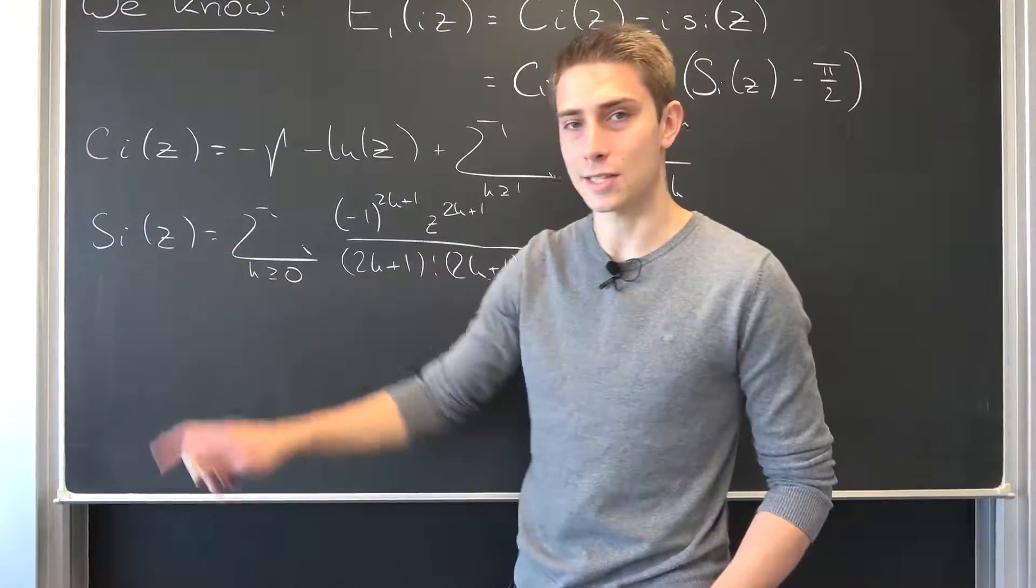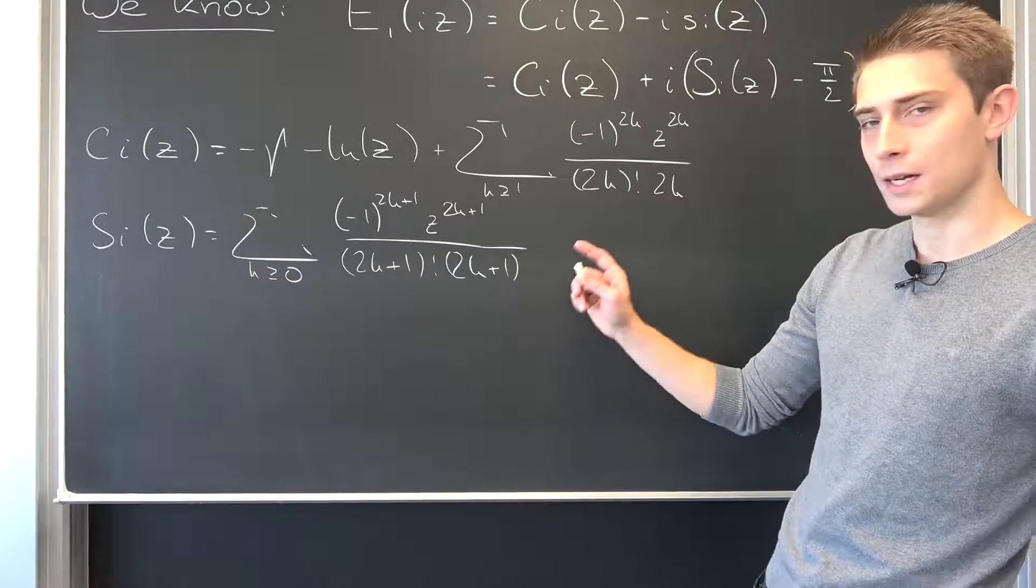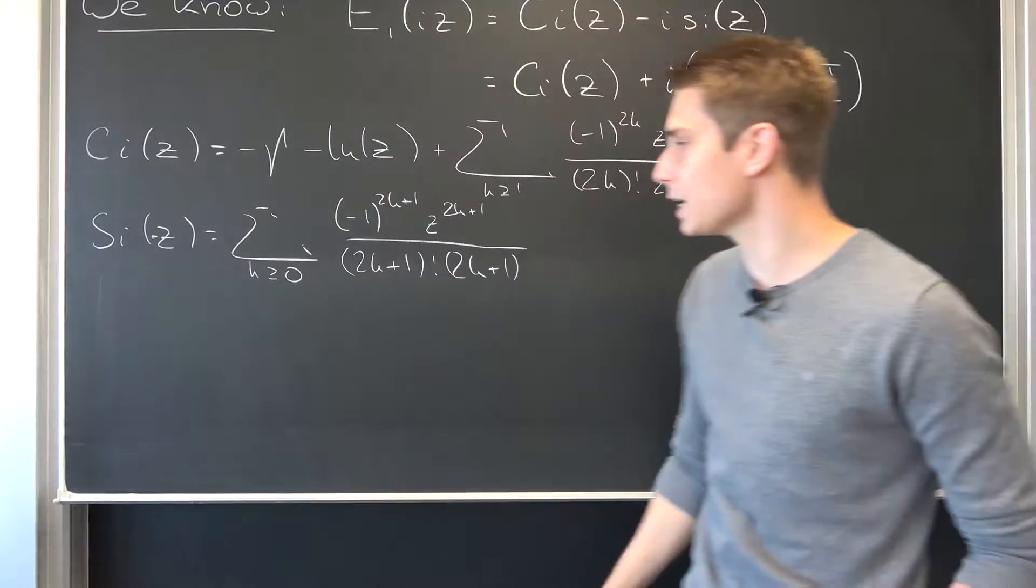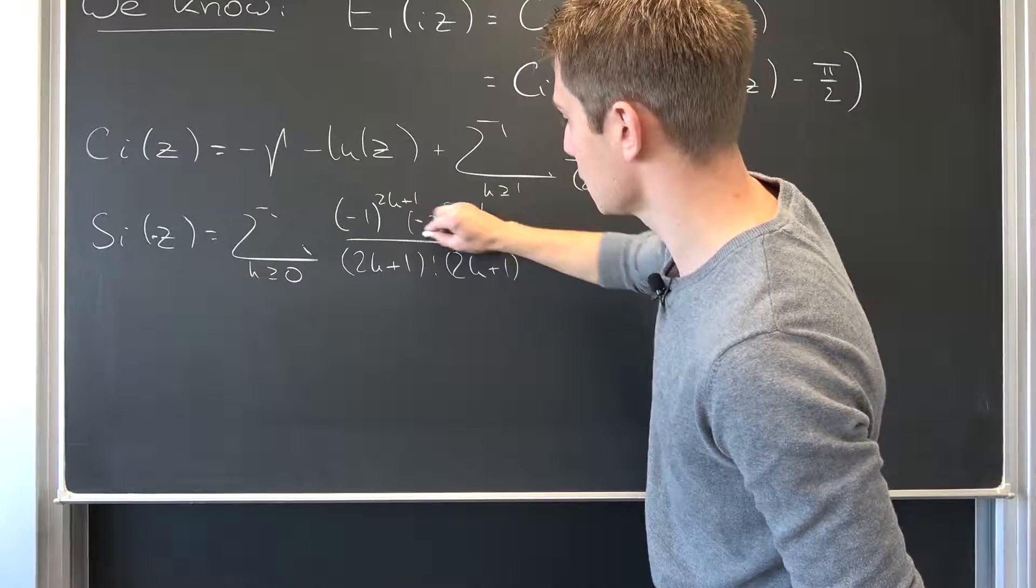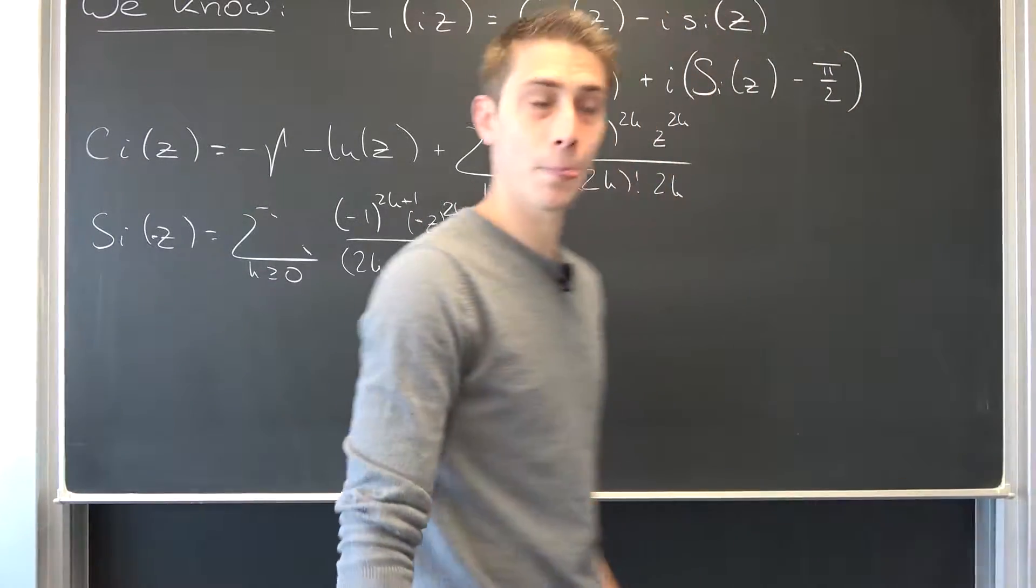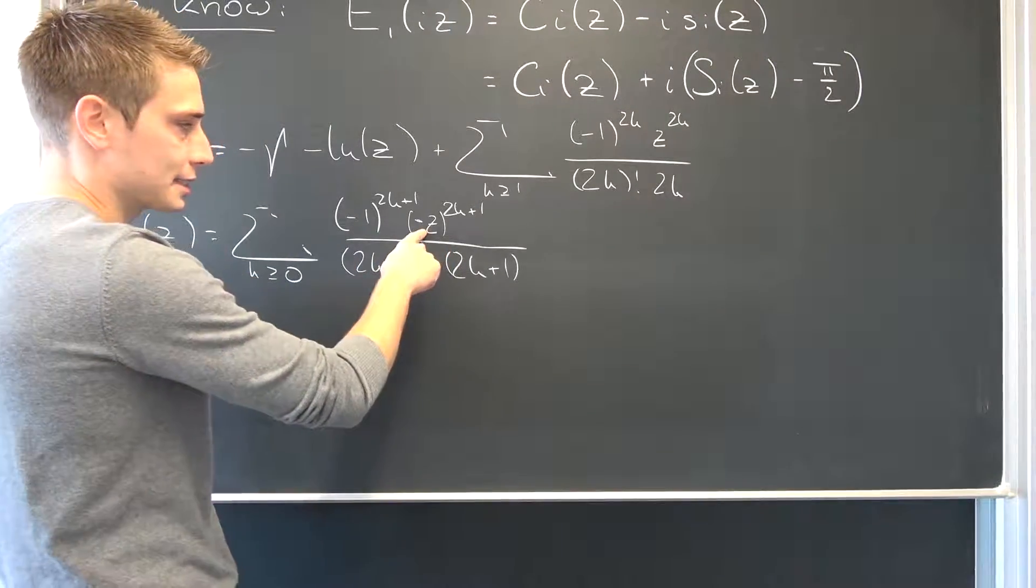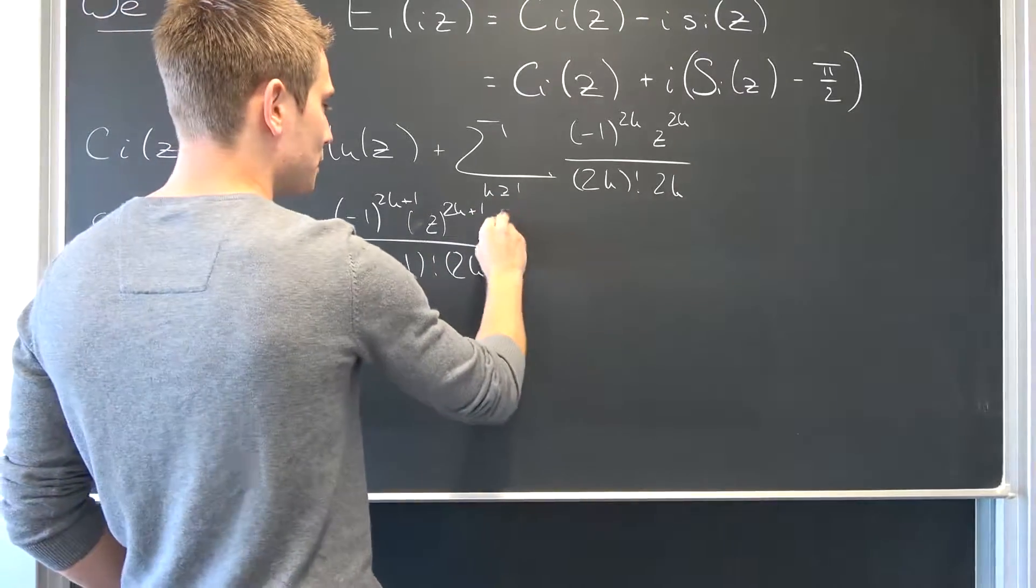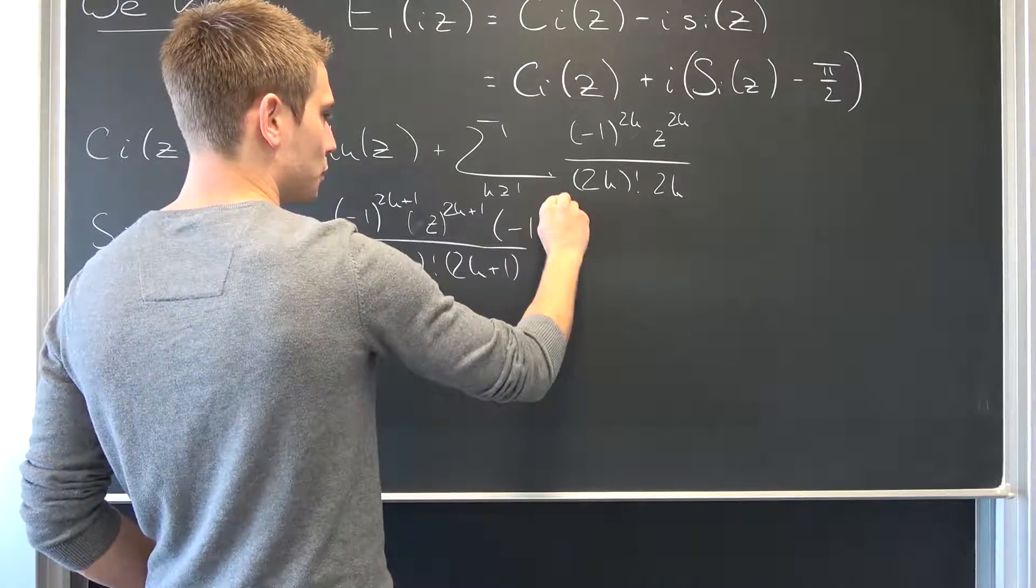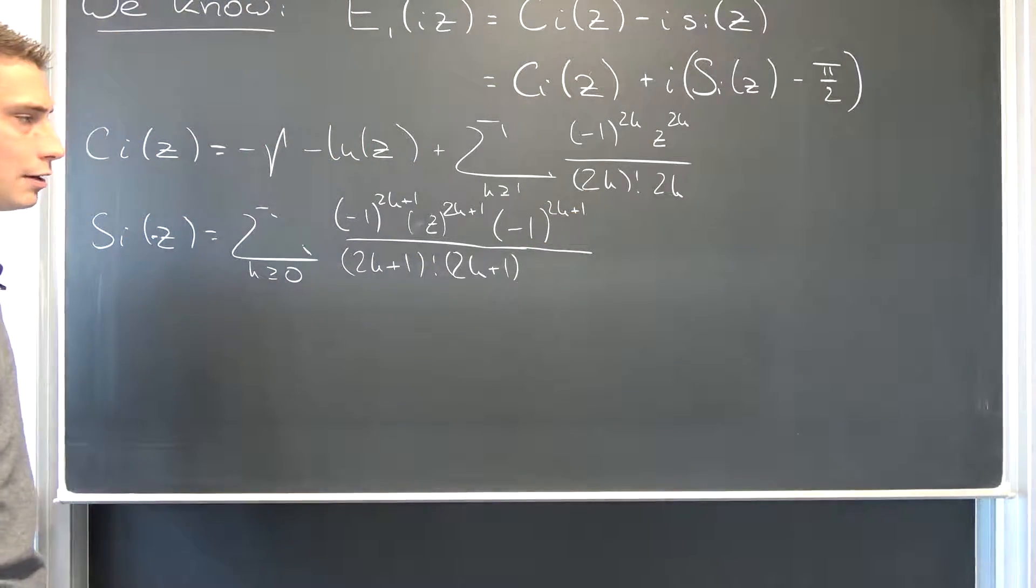We are going to start off with Si of negative z and then we are going to see what happens. Negative z, and then we are going to have negative z to the 2k plus 1th power. This one is a really easy case because we can break it up. This is z to the 2k plus 1th power times negative 1 to the 2k plus 1th power. This is what we are going to have right now.